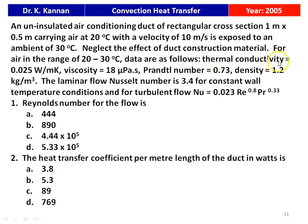An uninsulated air conditioning duct of rectangular construction of 1 meter by 0.5 meter carrying air at 20 degree Celsius with a velocity of 10 meters per second is exposed to ambient conditions of 30 degree Celsius. Neglect the effect of the duct construction material. For air in the range of 20 to 30 degree Celsius, the data given: thermal conductivity 0.025 W/m·K, viscosity 18 micro Pascal-second, Prandtl number 0.73, density 1.2 kg/m³.